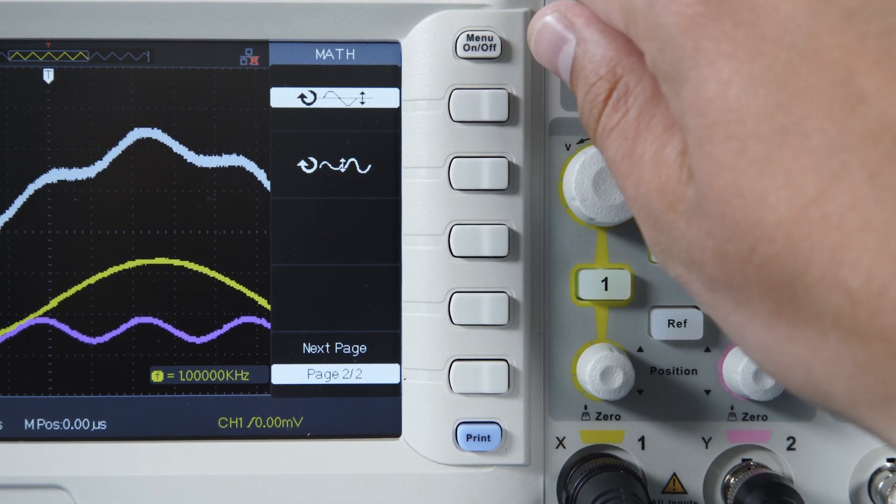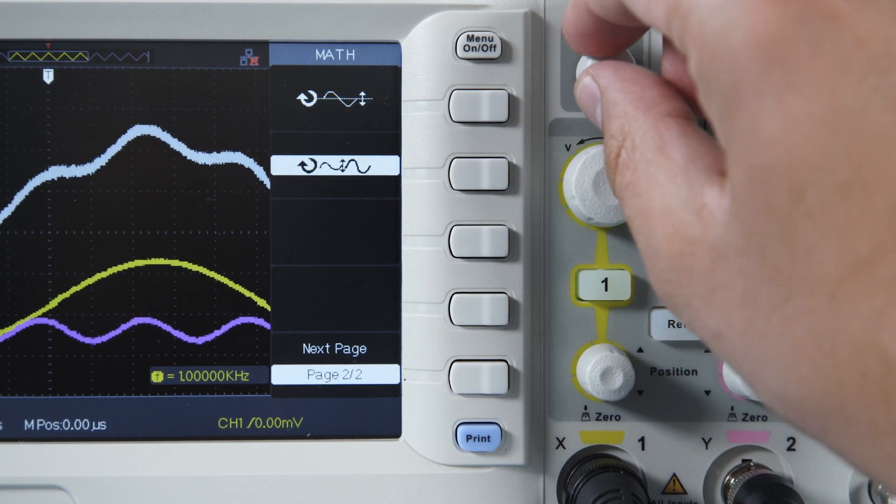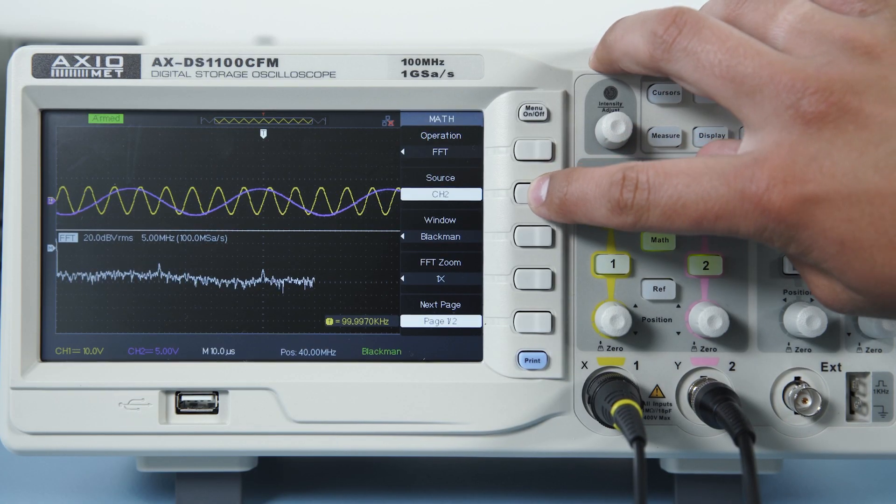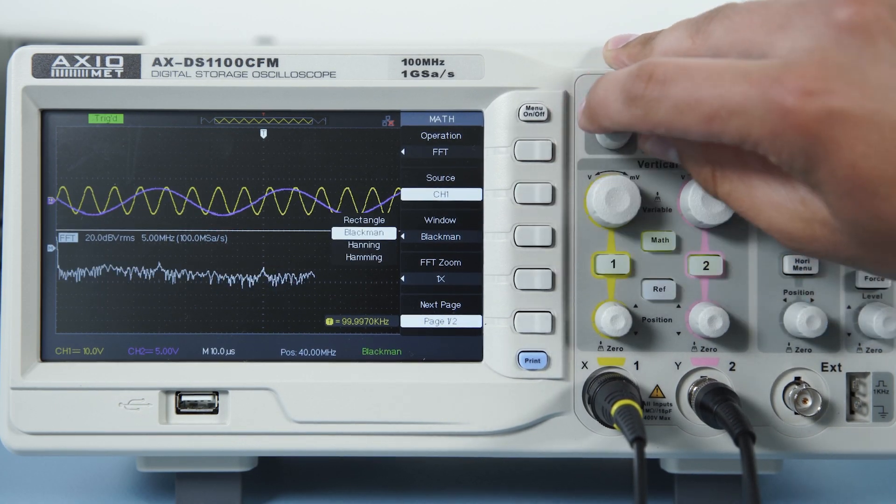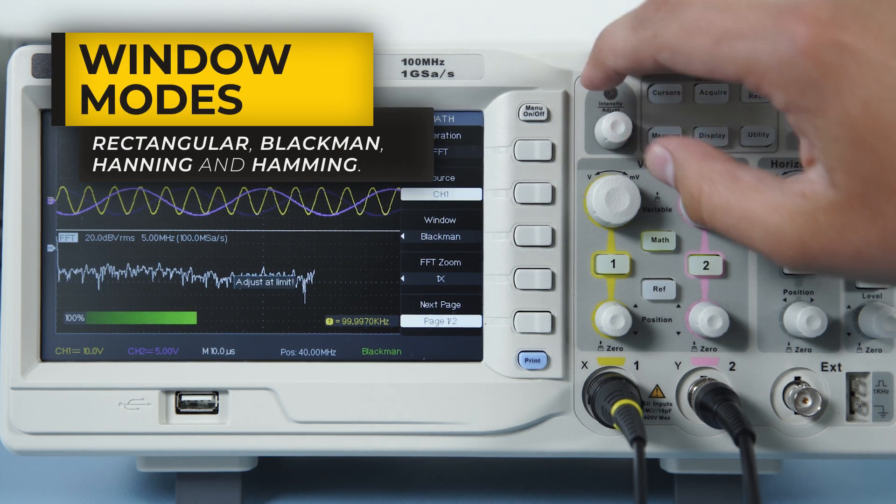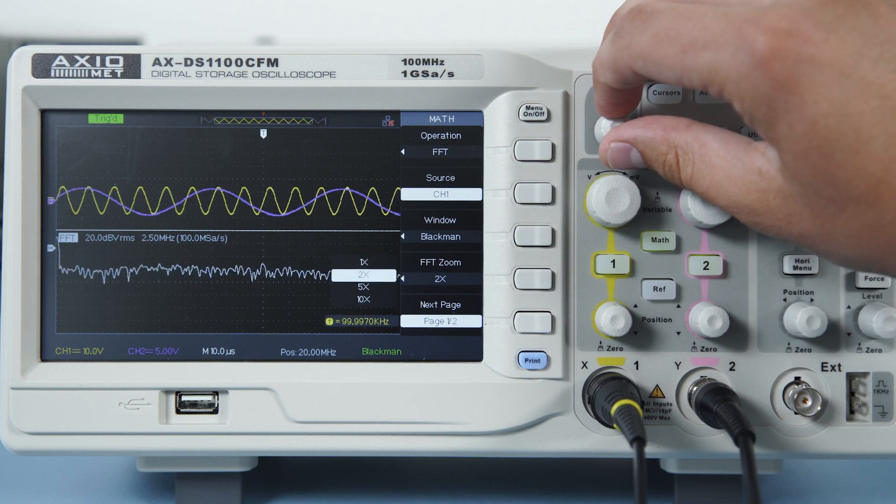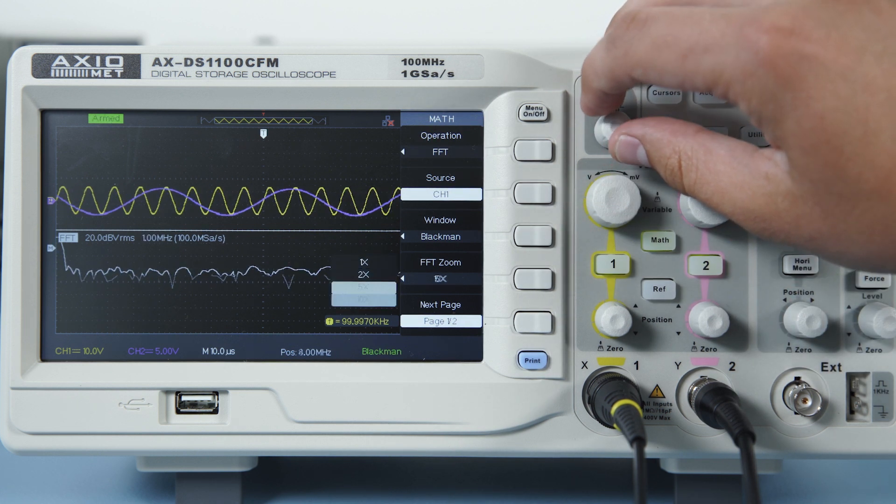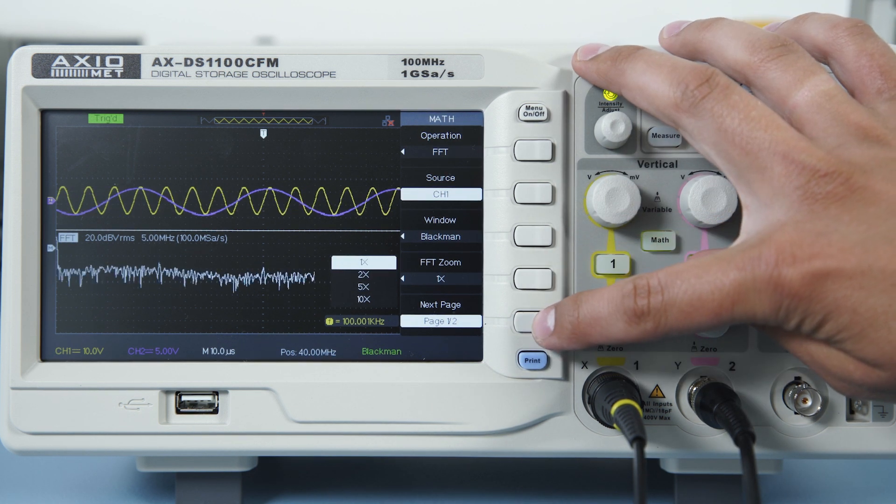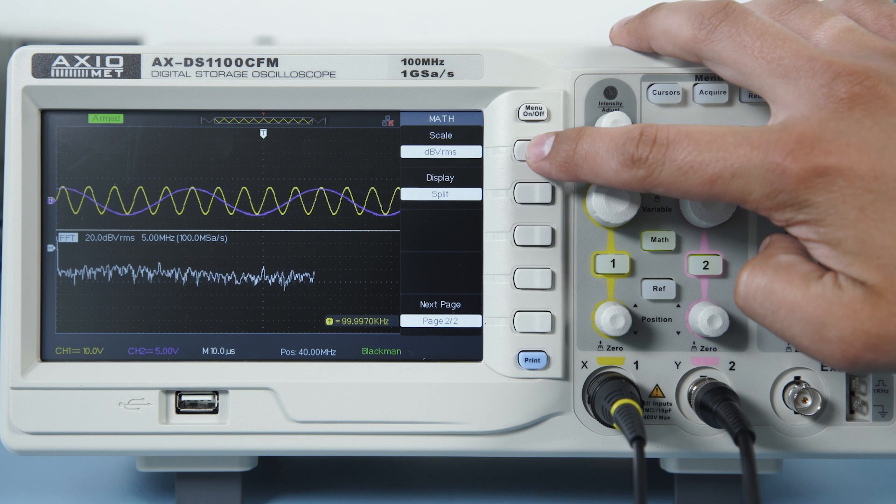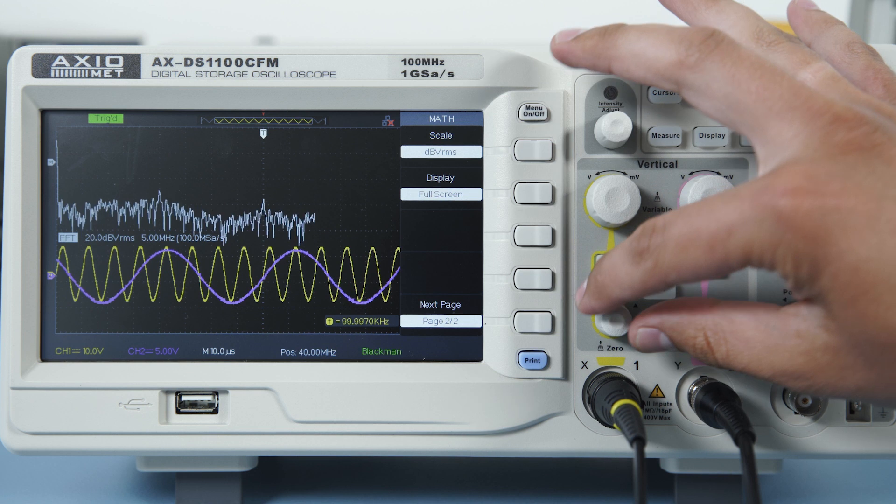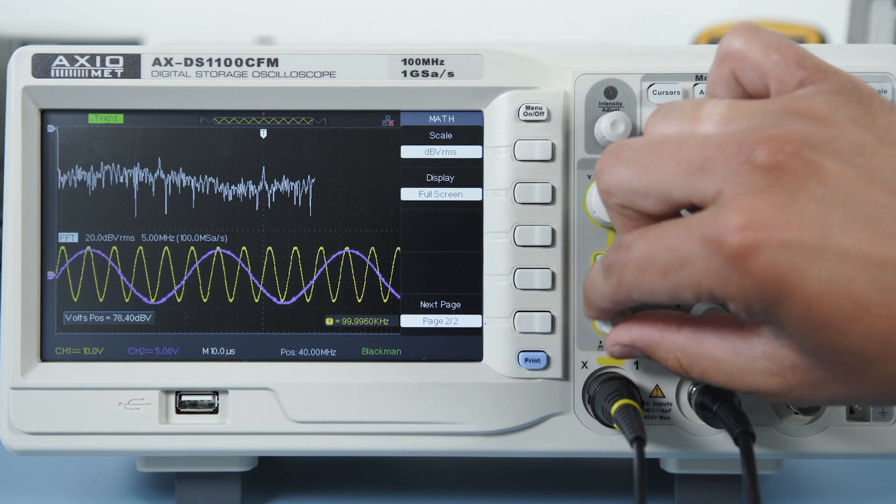In order to adjust math waveform vertical positioning or its scale, go to the second page and use the Universal knob. While in FFT, you can switch between channel 1 and channel 2 as the source, switch between 4 window modes in order to reduce spectral leakage, and also zoom into the FFT spectrum. Change the units between dBVRMS and VRMS, and change FFT display between full or split screen for higher convenience.